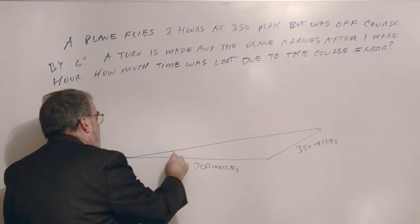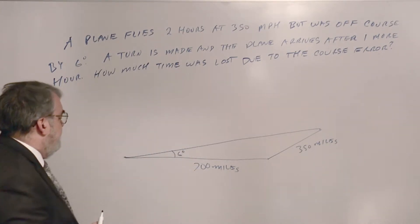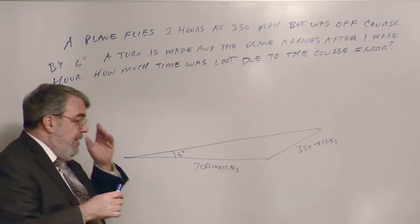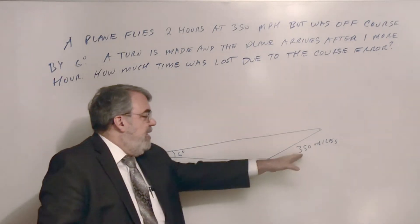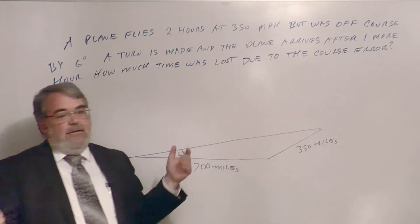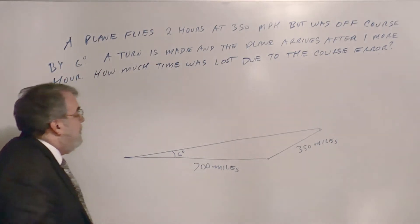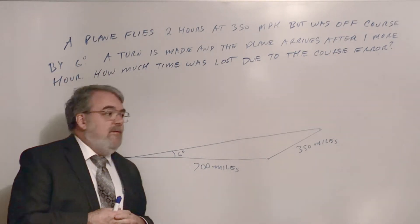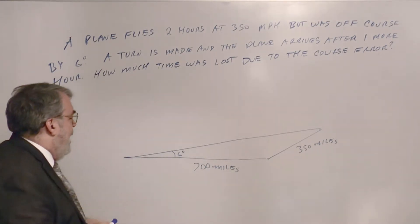The destination is at the top; the plane flew 700 miles off-course by 6 degrees, then 350 miles to arrive. This is a side-side-angle (SSA) instance — also called the ambiguous case. I want to find the direct distance D from start to destination. I can't solve directly because both D and the angle opposite it are unknown.